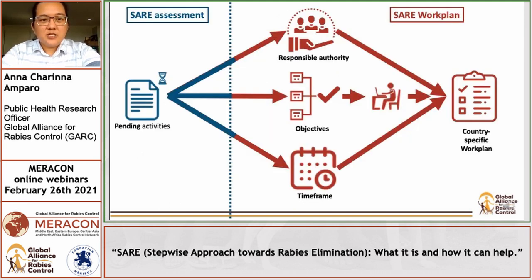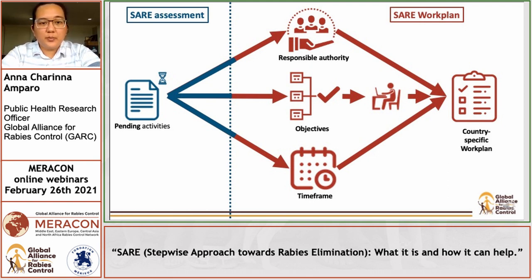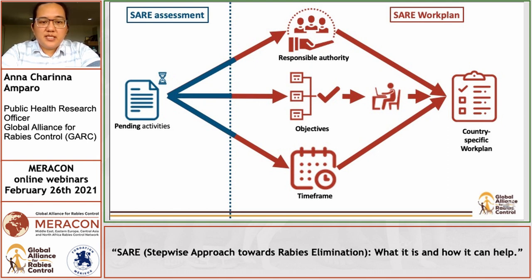In summary, from the list of pending activities in the SARA assessment, the country would need to refine the generic work plan automatically generated by identifying responsible authorities, customizing objectives, and adding a timeframe for each activity to develop their own country-specific work plan.